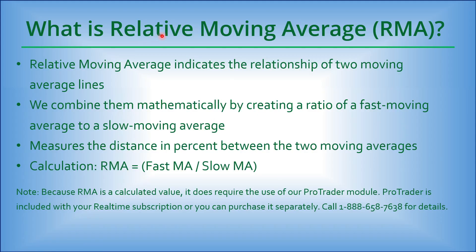So what is relative moving average — the RMA? Relative moving average indicates the relationship of two moving average lines, for example the 3 EMA and its relationship to the 8 EMA. We combine them mathematically by creating a ratio of fast moving average to slow moving average, and it measures the distance in percent between the two moving averages, with a simple calculation: the fast moving average is divided by the slow moving average.